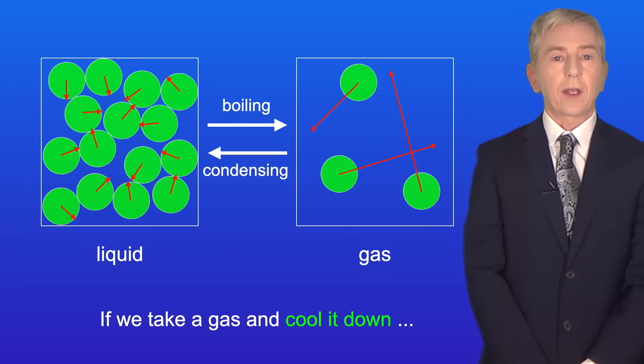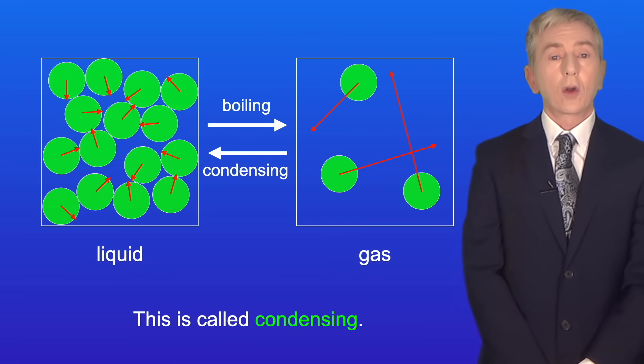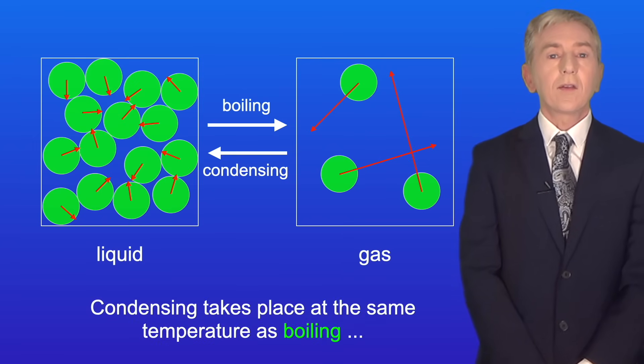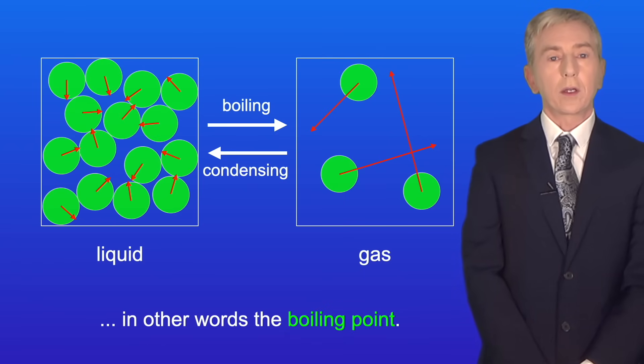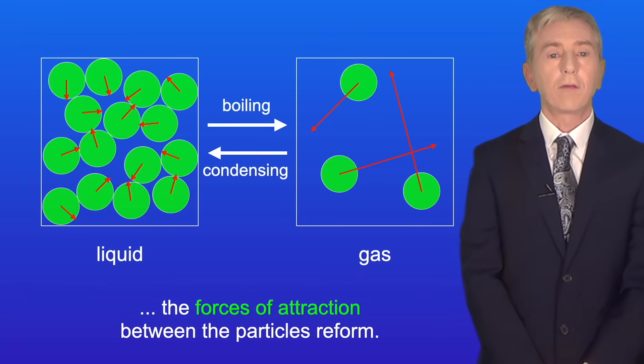Now, if we take a gas and cool it down, we can convert it back to a liquid. This is called condensing. Condensing takes place at the same temperature as boiling, in other words, the boiling point. And when a substance condenses, the forces of attraction between the particles reform.